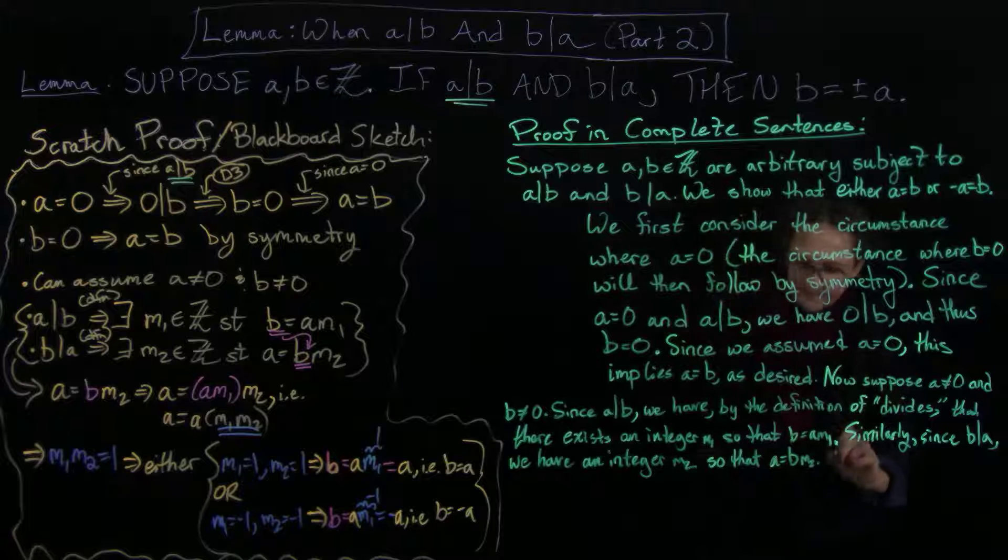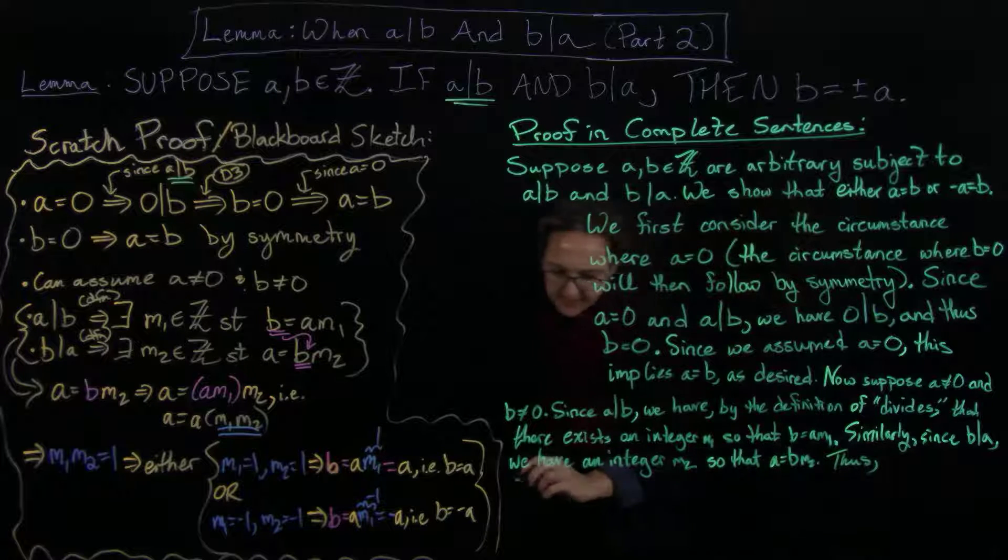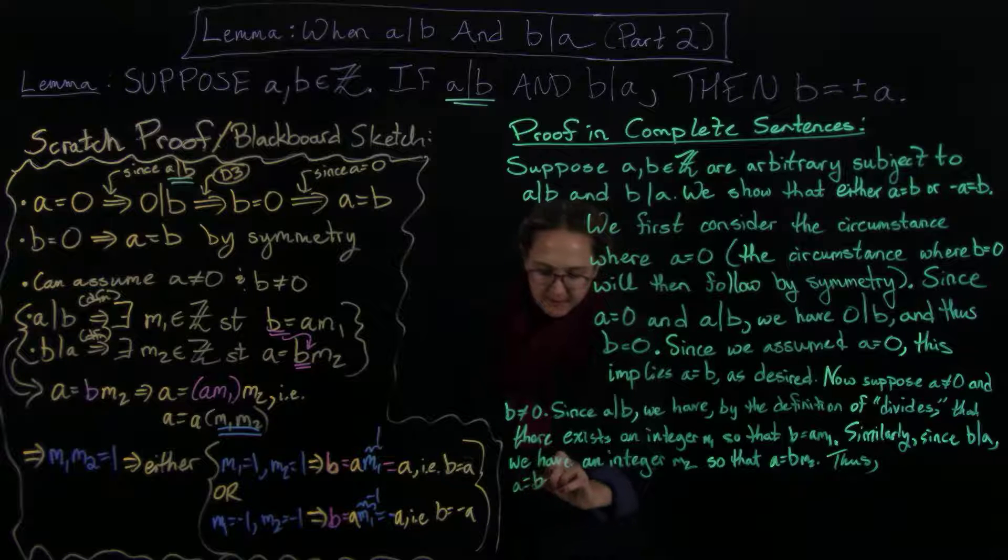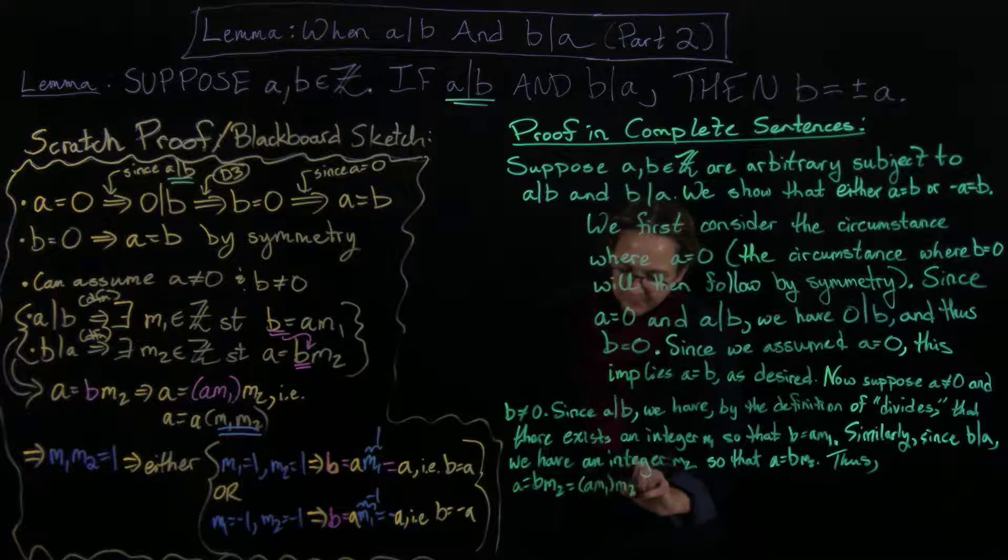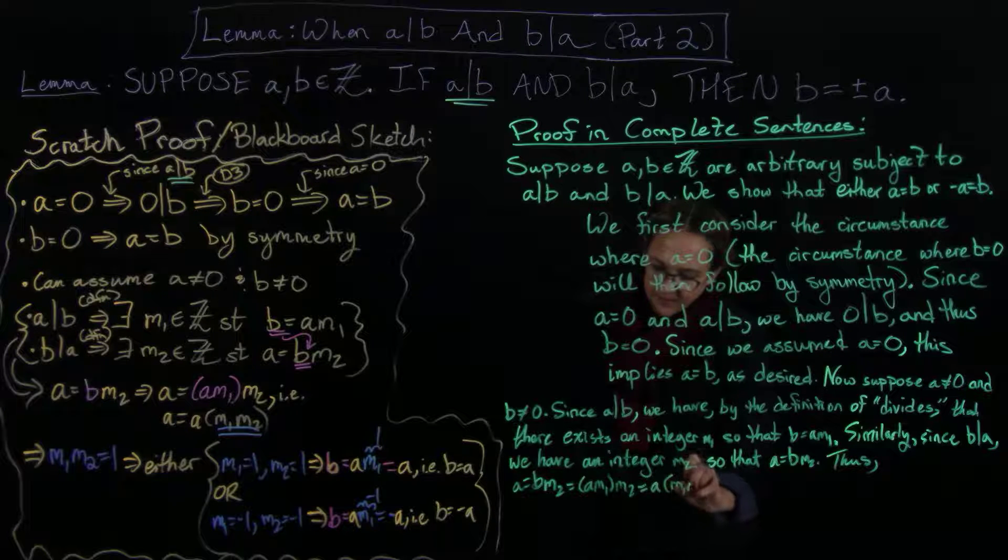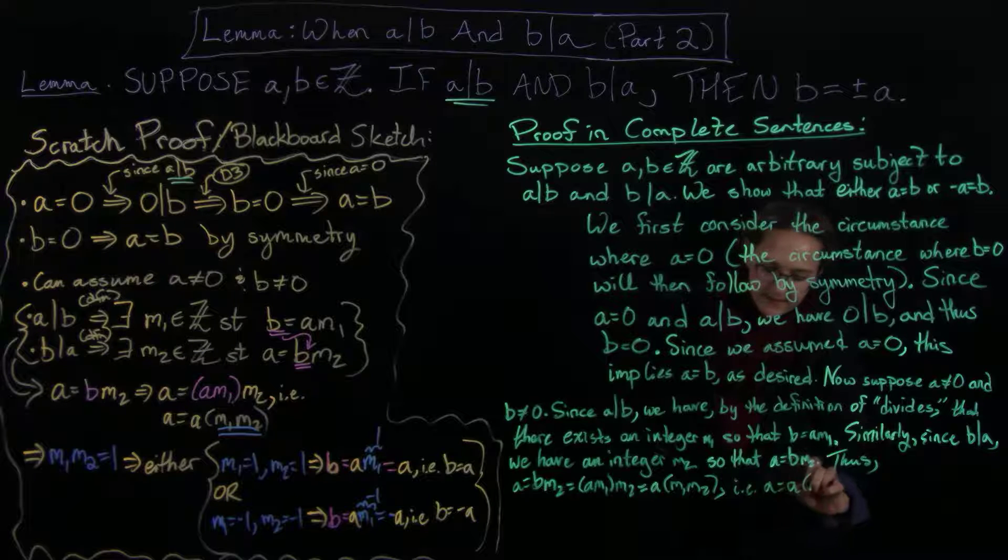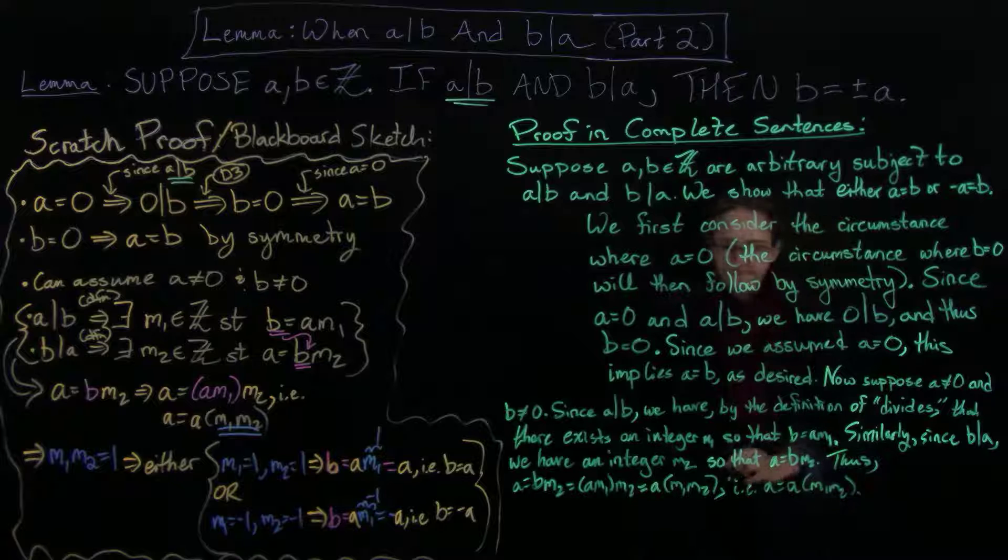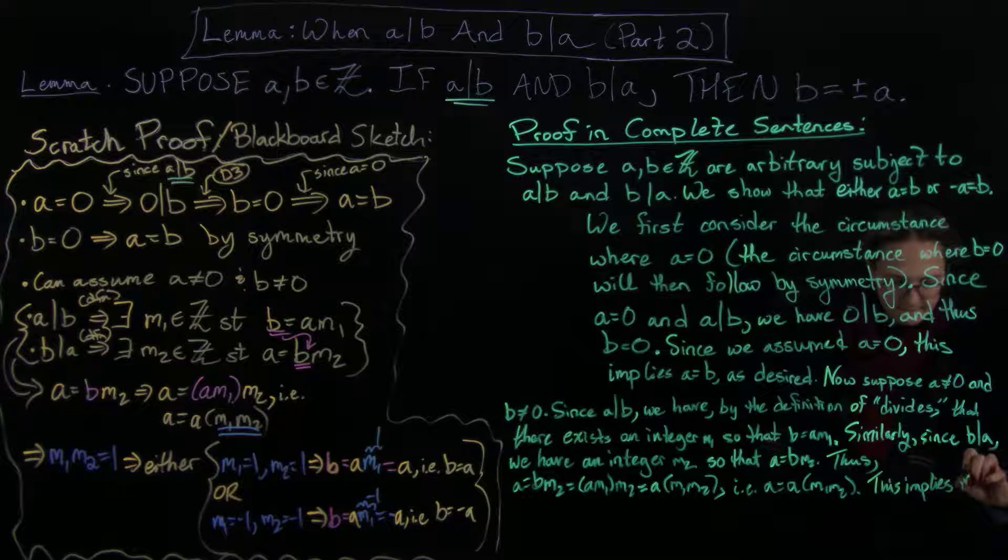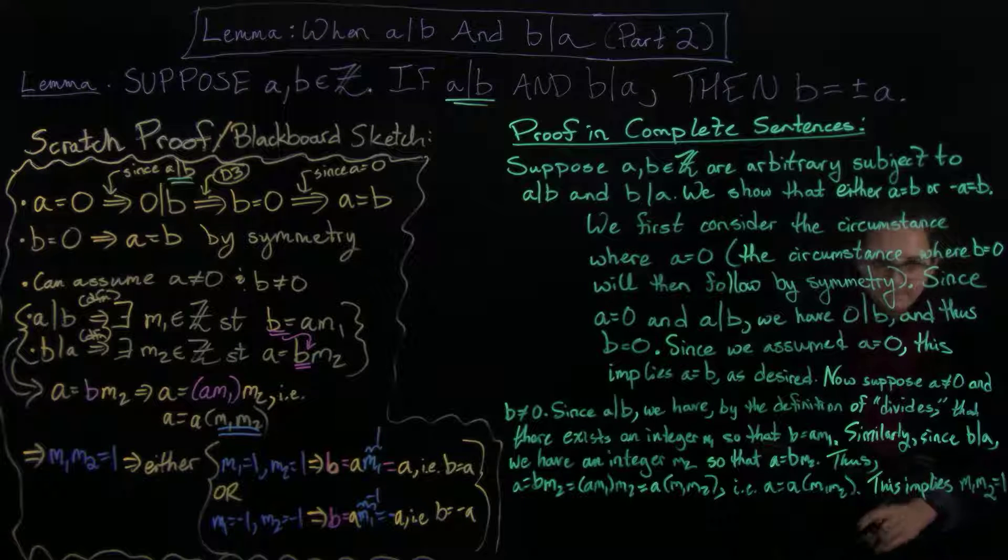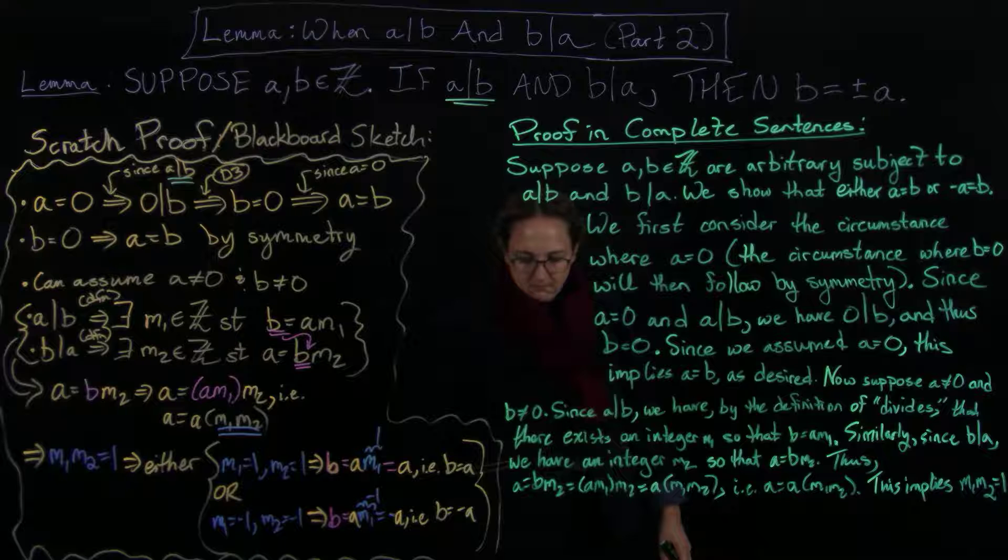And then we're going to have like a big string here. So a equals b m2 equals a m1 times m2, which is going to equal a m1 m2, i.e. a equals a times m1 m2. Now this implies m1 m2 equals one.